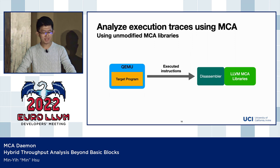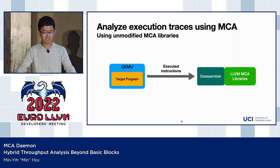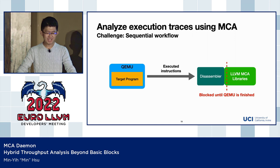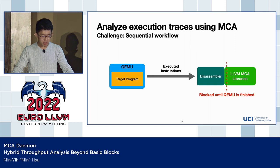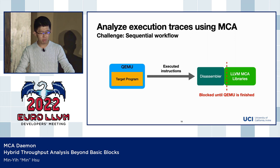Now let's talk about how we build MCAT. The most intuitive way is to integrate QEMU with MCA libraries: we have QEMU, pipe execution instructions into a disassembler, and the disassembler feeds the MCInst to the LLVM-MCA library. How hard can it be? It turns out, even before we could run this tool, we had a problem. The entire LLVM-MCA library analysis part would block until QEMU was finished.